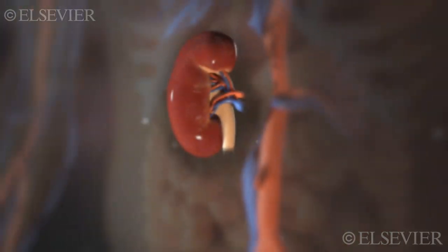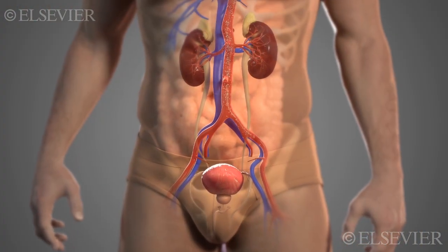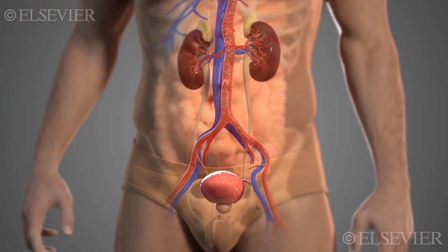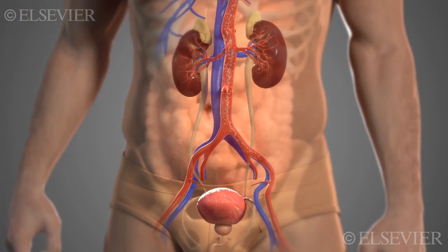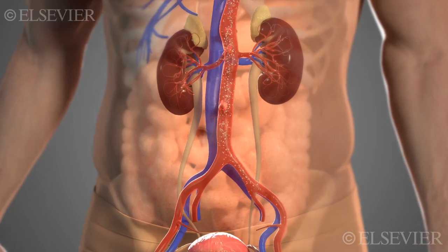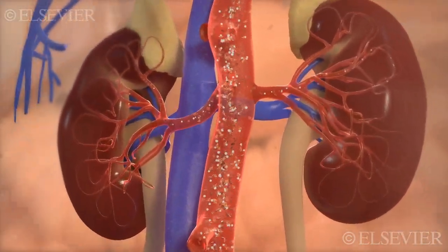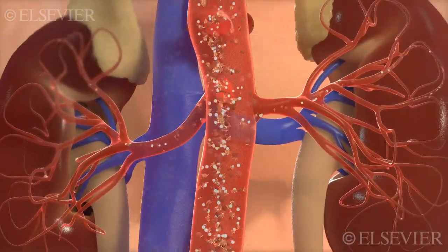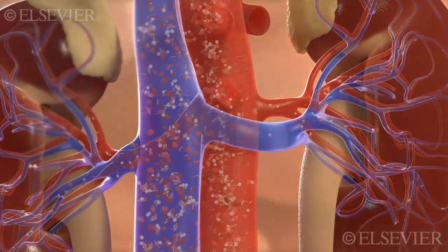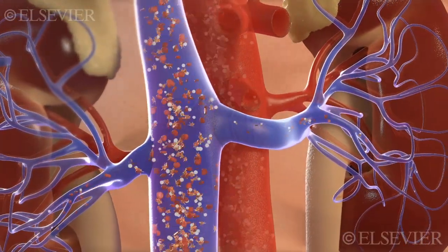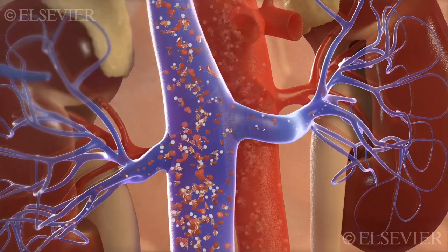The kidneys are highly vascular. Each minute, approximately 1,200 milliliters of blood, or one-fifth of all the blood pumped by the heart in that minute, passes through the kidneys.